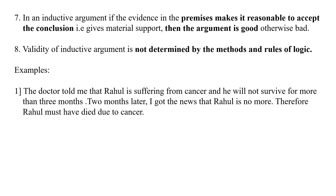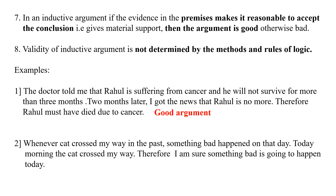Now let us take examples. First: The doctor told me that Rahul is suffering from cancer and will not survive more than three months. Two months later, I got news that Rahul is no more. Therefore, Rahul must have died due to cancer. This is a good argument because the premises give material support to the conclusion. Second: Whenever a cat crossed my way in the past, something bad happened that day. Today morning the cat crossed my way. Therefore, I am sure something bad is going to happen today. This is a bad argument because the evidence gives no material support to the conclusion — a cat crossing one's path has nothing to do with good or bad events.